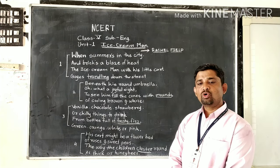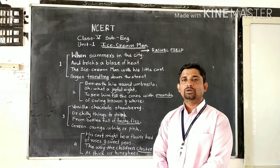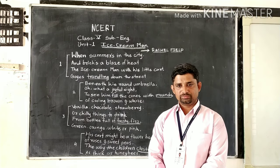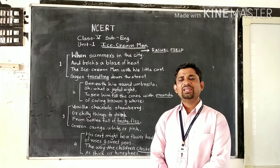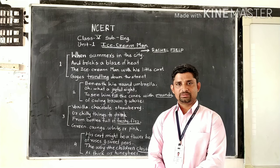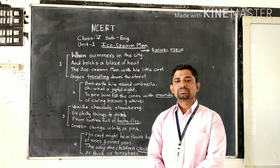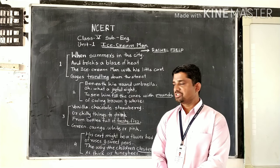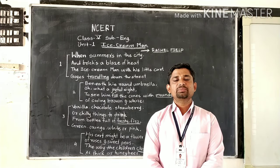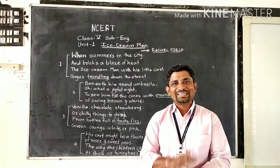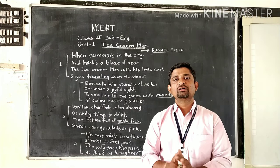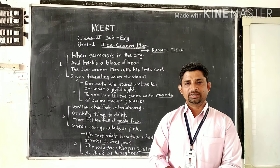Here in this first stanza, the poet explains about the hot summer afternoon — a blaze of heat, very hot. And at that time, the ice cream man with his little cart comes trundling down the street. Trundling means the broad wheels of the cart make a noise as they roll.